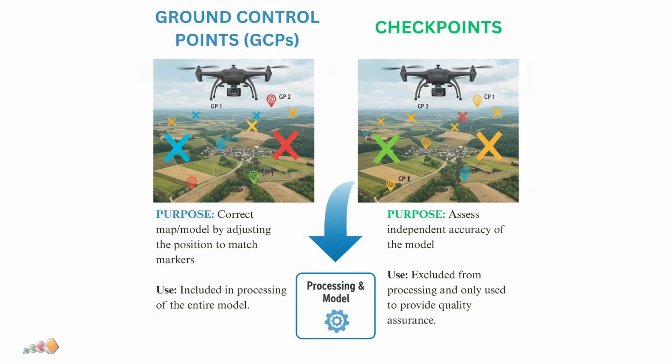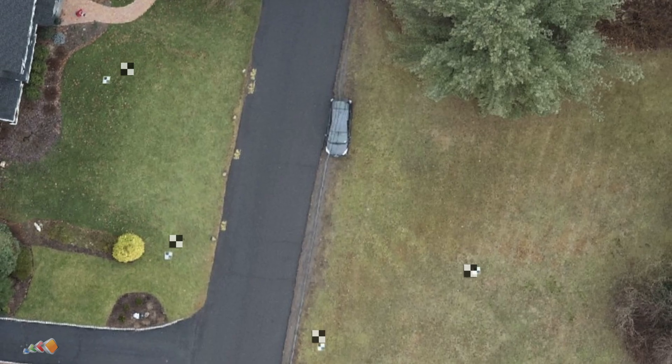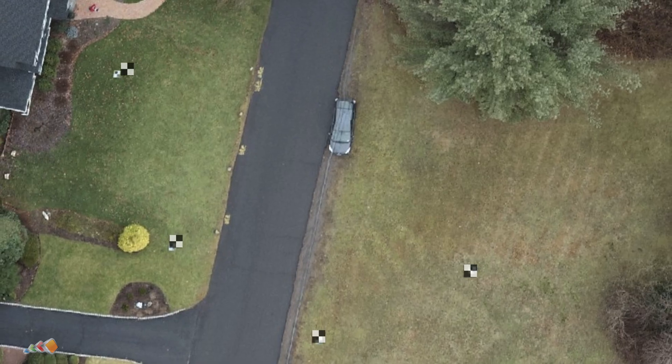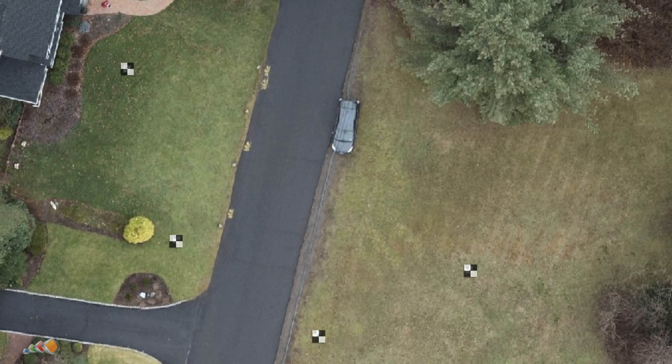What's the difference between a GCP and a checkpoint? Ground control points, GCPs, are used by the software to process the images and create the map. They are the known points that anchor your map to the real world. Most importantly, they actually adjust the map to fit by moving, stretching, and warping the map — so using them to check your results isn't really a good idea. It's a bit like asking the same doctor to give you a second opinion.